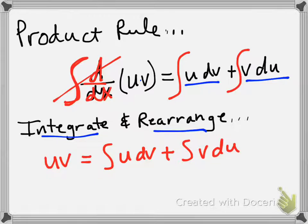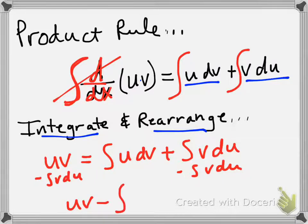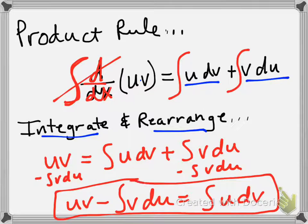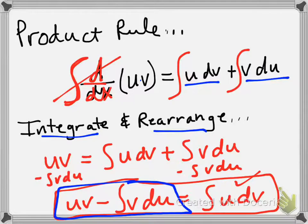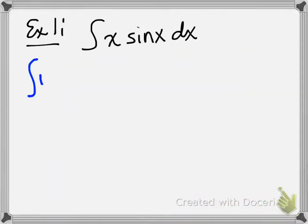Now I'm going to subtract the integral of v du to the other side, and that's going to leave me with u times v minus the integral of v du. This is the integration by parts formula. We're going to start with the integral of u dv side, using the formula: the integral of u dv equals u times v minus the integral of v du.